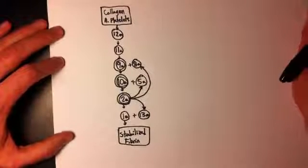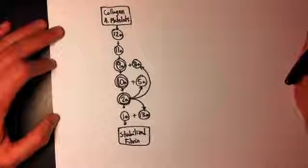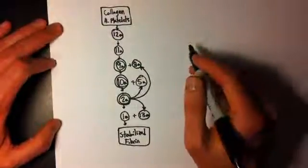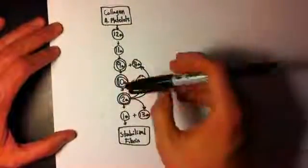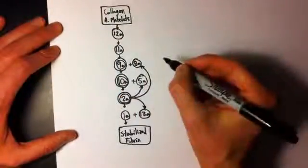So the only thing to add now is the extrinsic pathway. Extrinsic pathway comes in and matches up into 10A. There's a different way to make 10A besides using 9A, you can use 7A.